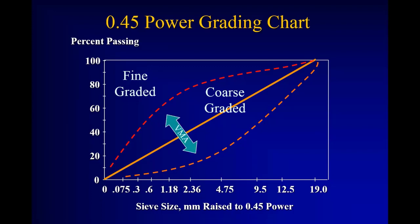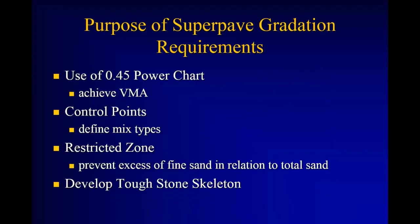The area graphically represented under our gradation curve to that maximum density line is our VMA — voids in mineral aggregate. It's the intergranular void space in the compacted aggregate sample. The further the gradation is from the maximum density line, the greater the VMA. VMA is a common volumetric property used in asphalt mix design, whether it's Superpave, Marshall, Hveem, or any of the standard mix design methods.